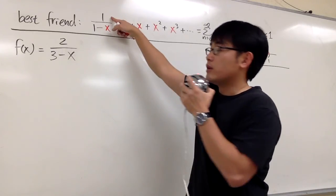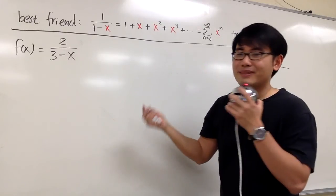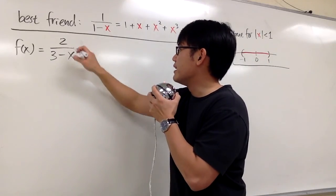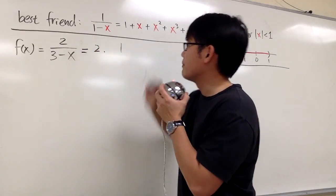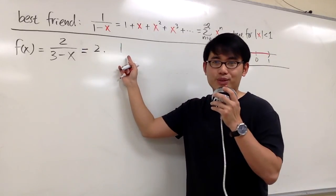Here we have the 2, but the best friend told us that we want the 1 on the top. It's okay, let's do 2 = 2 times 1. So we have the 1 to work with.